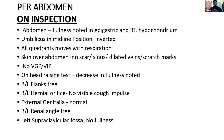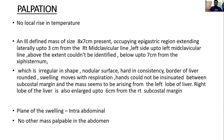On head-rising test, the fullness noted in the abdomen decreases in size. Bilateral flanks free. Bilateral hernial orifices — no visible cough impulse. External genitalia normal. Bilateral renal angle free. Left supraclavicular fossa — no fullness noted. On palpation, no local rise in temperature. An ill-defined mass of size 8×7 cm present, occupying the epigastric region extending laterally up to 3 cm from the right mid-clavicular line.